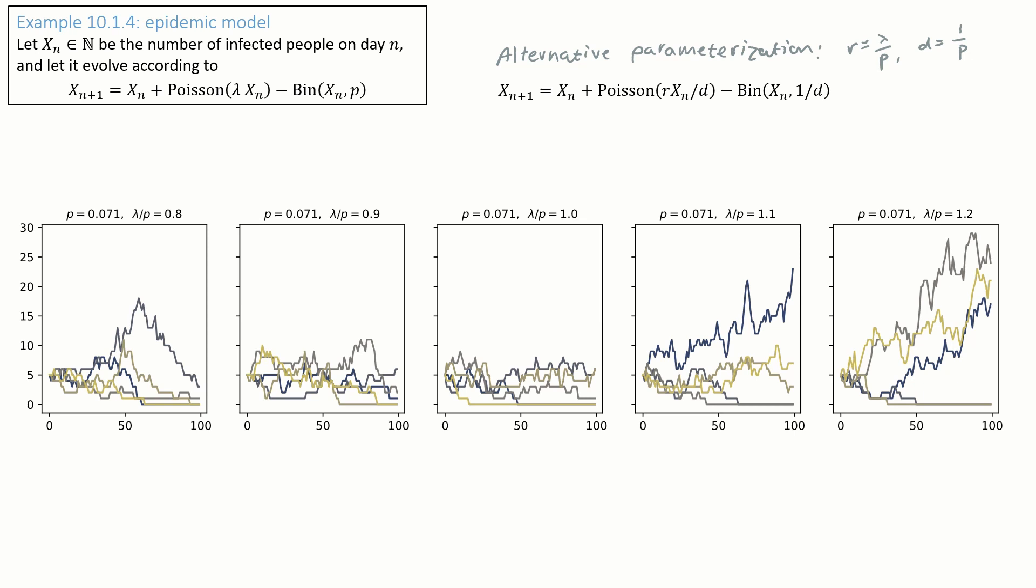And here are the plots we saw earlier, showing some simulation runs for a range of different parameter values. I chose different R numbers for each of the plots: R equals 0.8 on the left, R equals 1 in the middle, R equals 1.2 on the right.